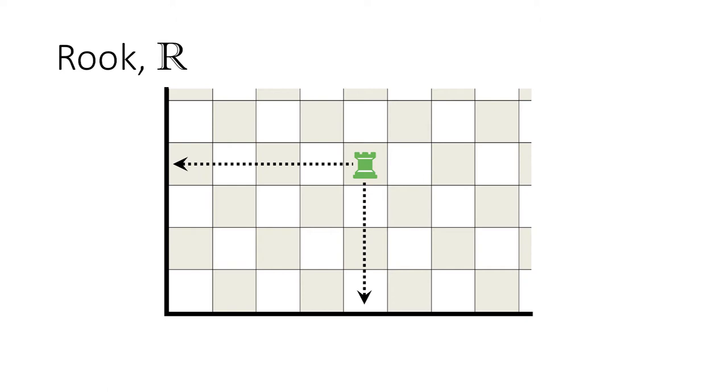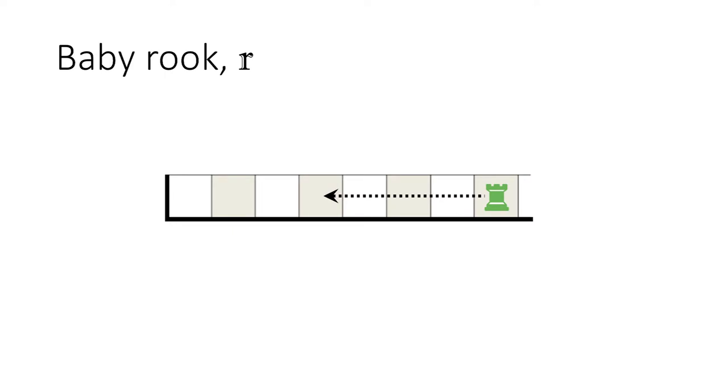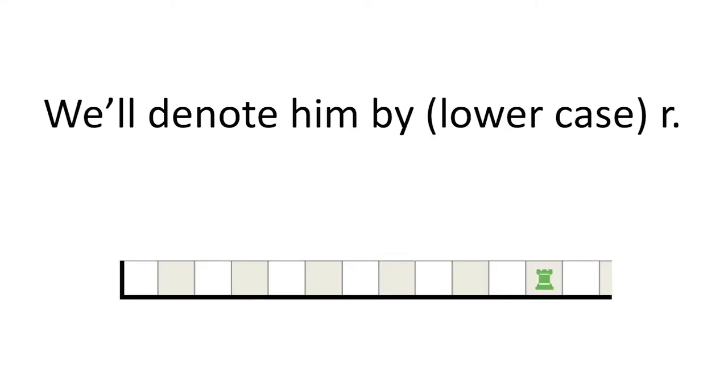As we did with the king, we'll begin these studies by considering a simpler case. When the rook is on the bottom row, he can move in only one direction. We'll then call him a baby rook, denoted by the lower case r.